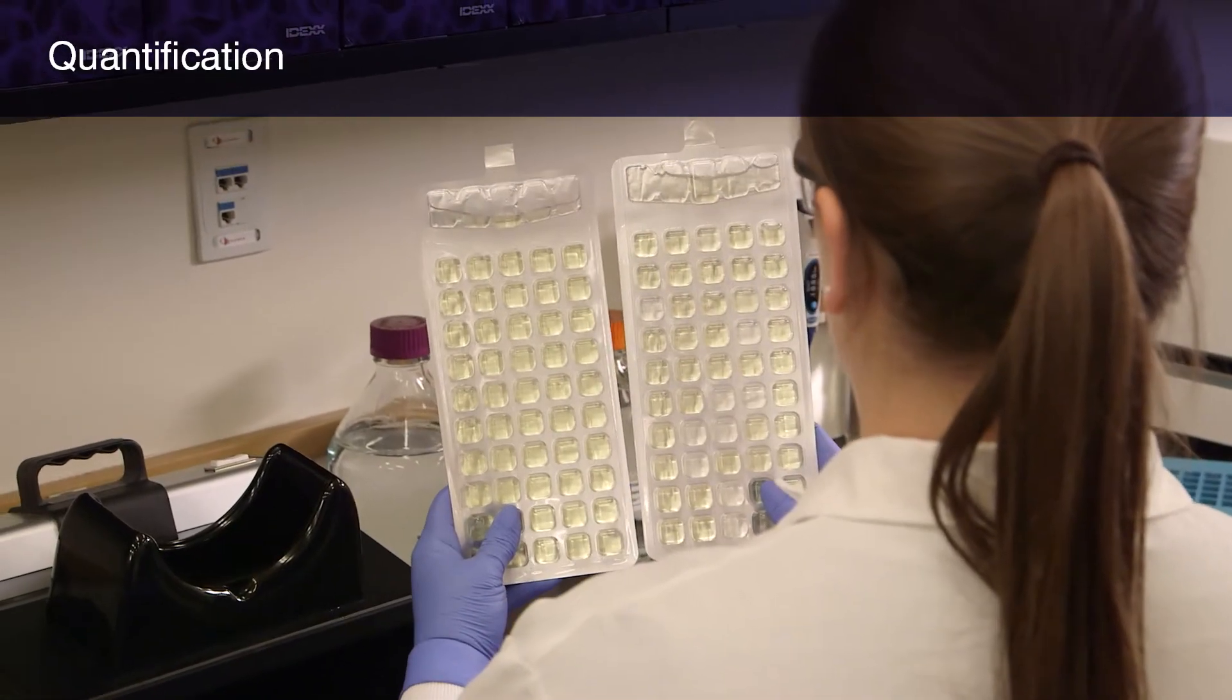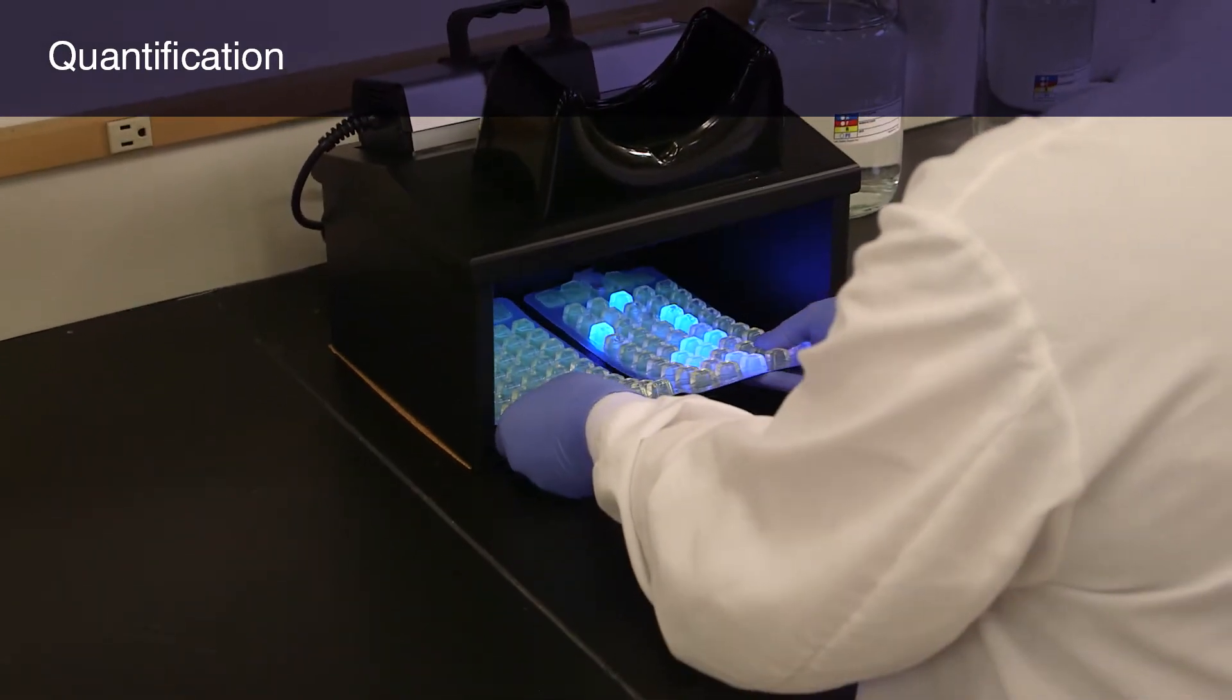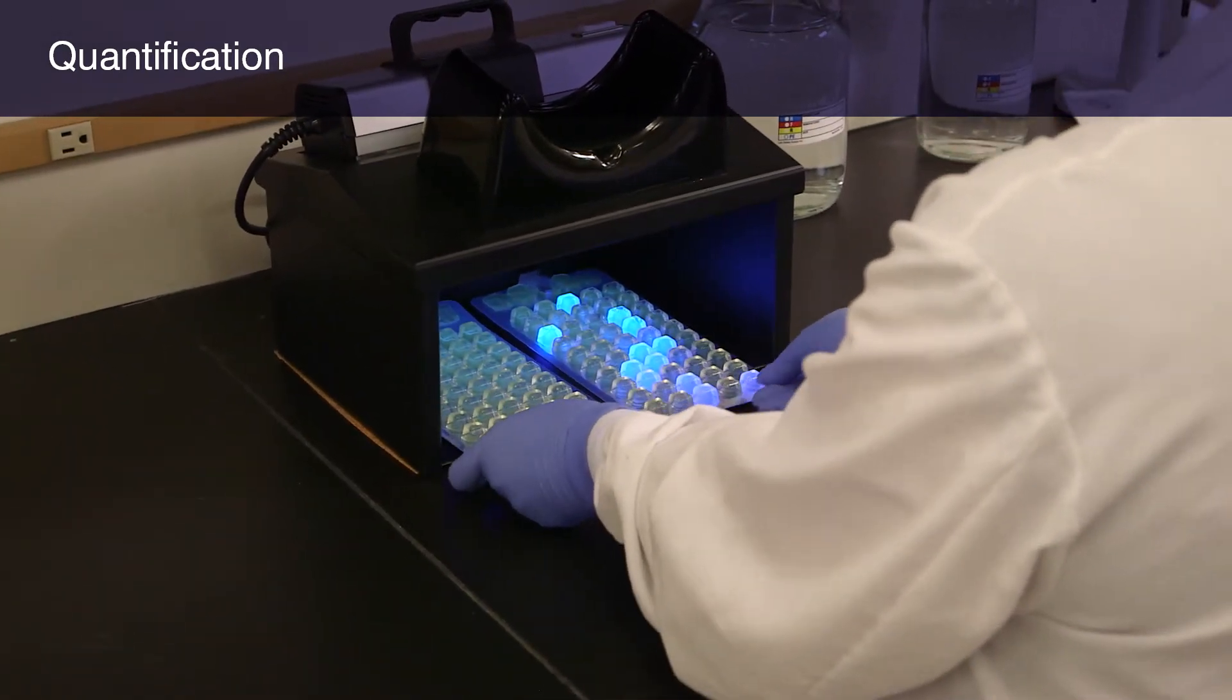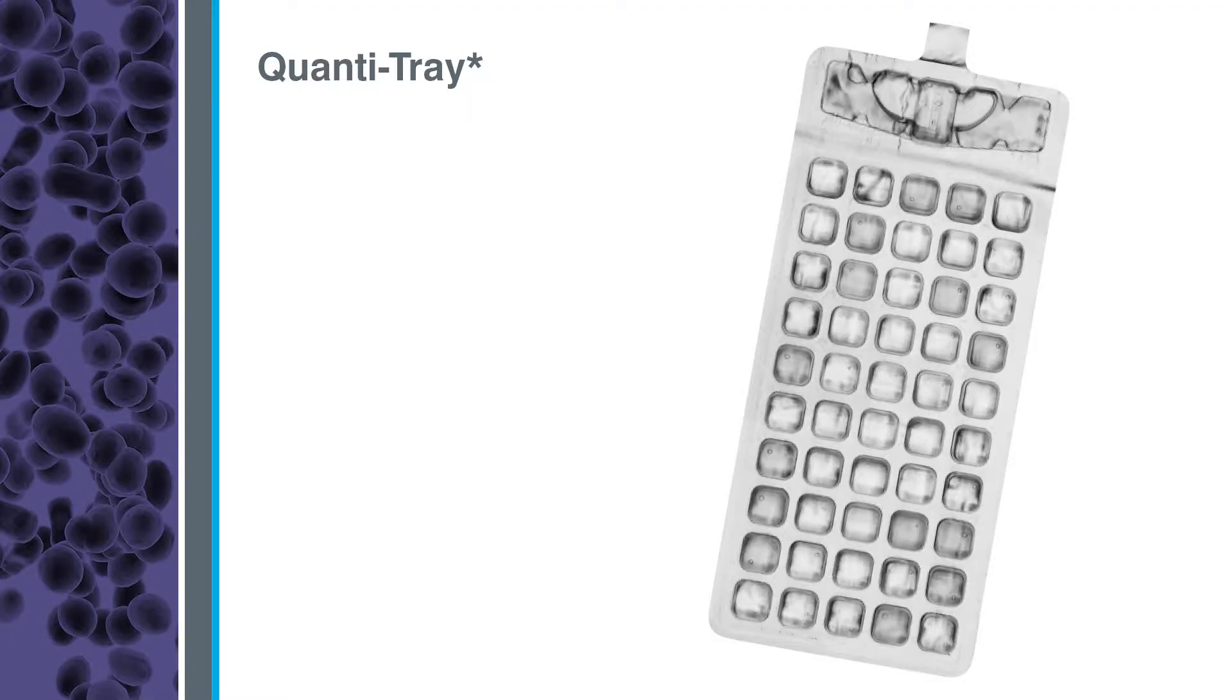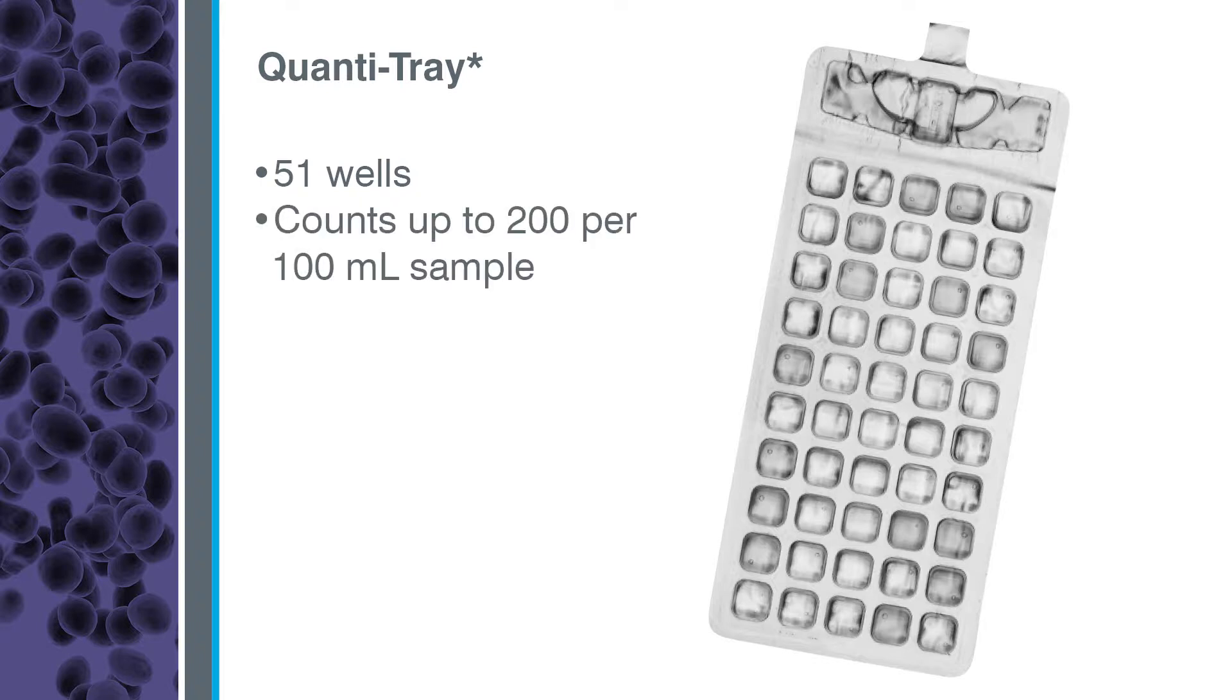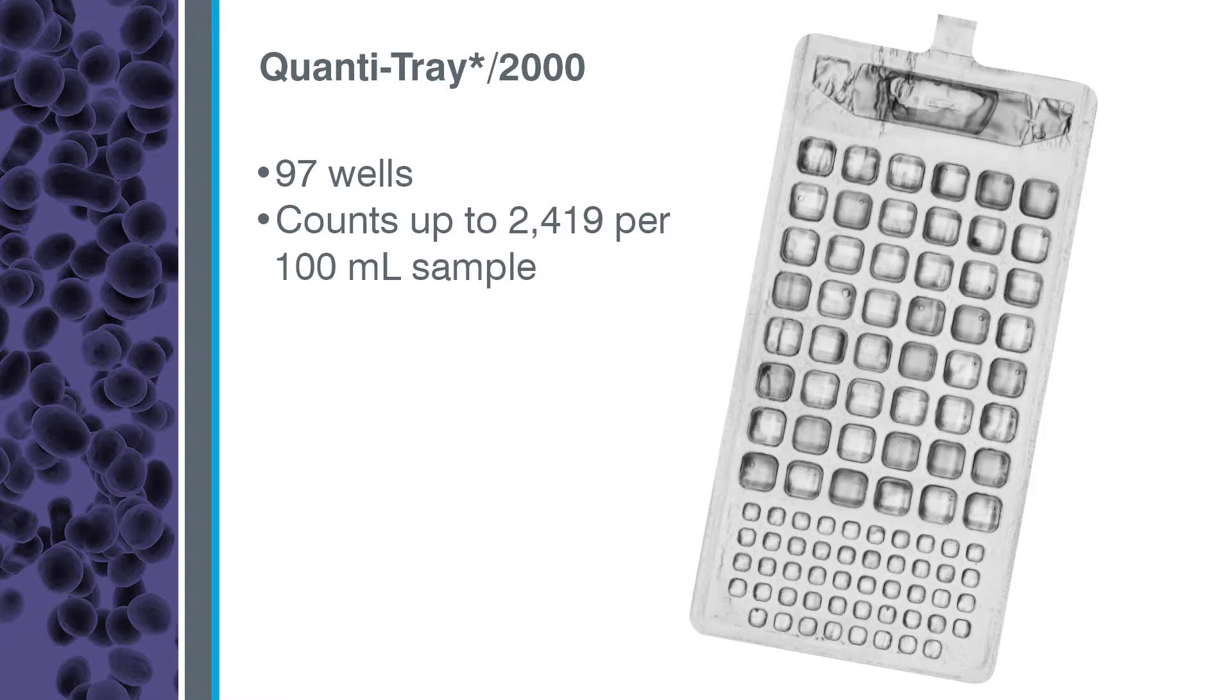Next, you'll learn to use the Entralert test with the Quantitray system to determine the number of enterococci in a water sample. IDEXX offers two sizes of Quantitray. Both work with the Quantitray sealer. The standard Quantitray is a disposable 51-well tray that provides counts up to 200 per 100 ml sample without dilutions. The Quantitray 2000 is a disposable 97-well tray that provides counts up to 2,419 per 100 ml sample without dilutions.